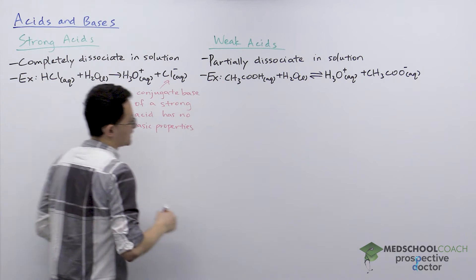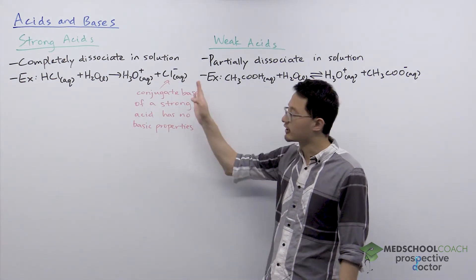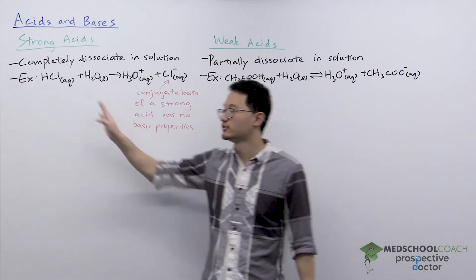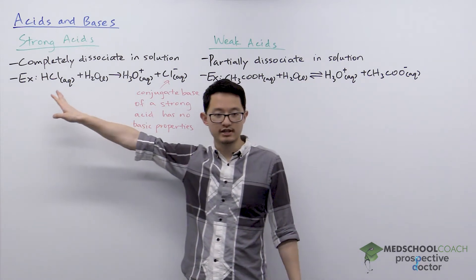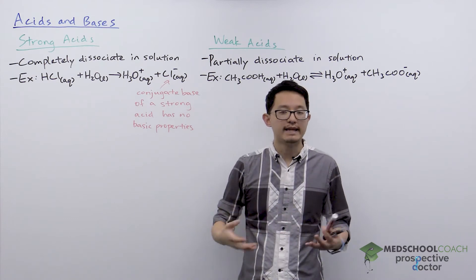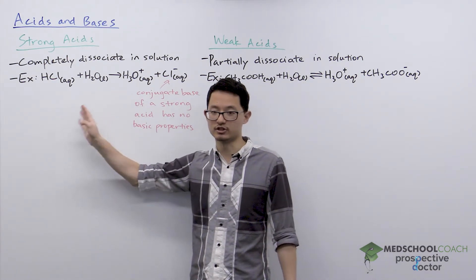So what we mean by the fact that the conjugate base of a strong acid has no basic properties is that chloride has zero desire to accept a proton to reform HCl. So essentially, any HCl molecules that dissociate to form hydronium ions and chloride will remain dissociated, and that allows for complete dissociation.